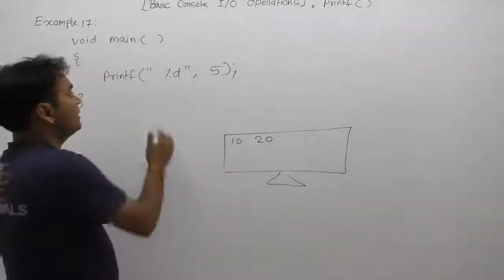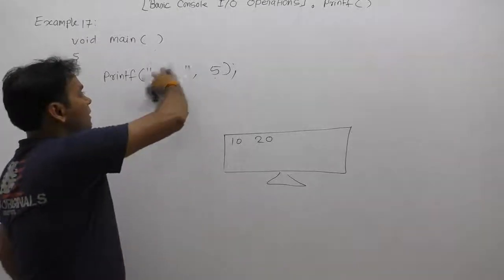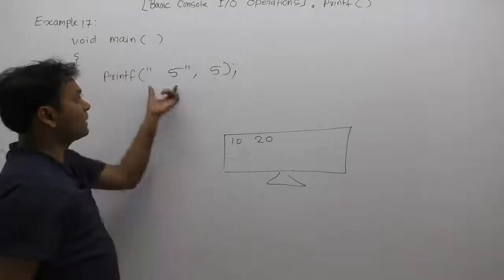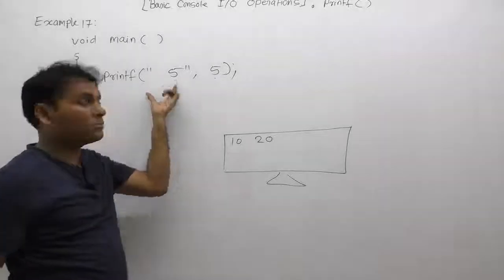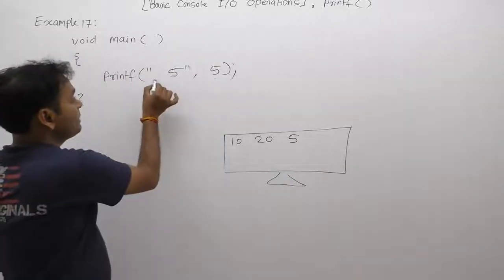Finally, inner printf function returns the number of displayed symbols. Then this 5 becomes input to the outer printf. In that, the first percent is replaced by the value 5. Therefore, the final message becomes space 5.